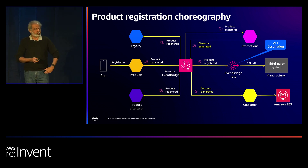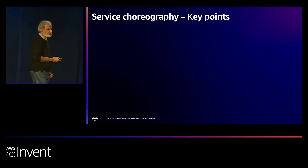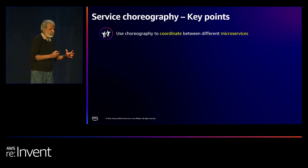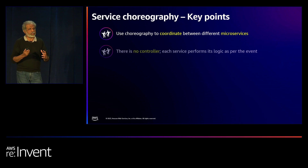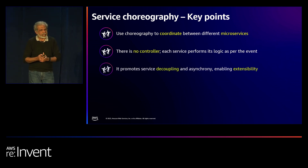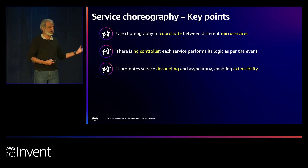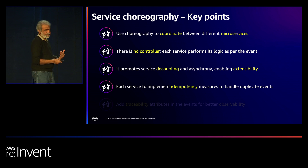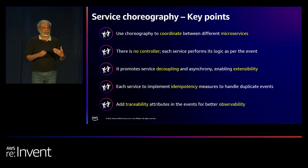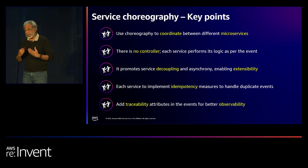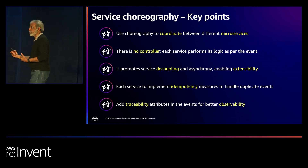Things to remember: choreography is coordination without a controller instructing each one what to do. It decouples services. Tomorrow, if you want to bring up a new microservice, it's easy to spin one up and make it part of the whole ecosystem. Idempotency is important, and for observability, adding and carrying tracing attributes all the way through are crucial.